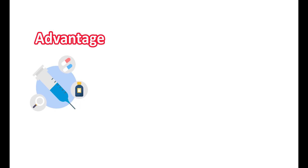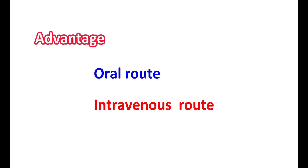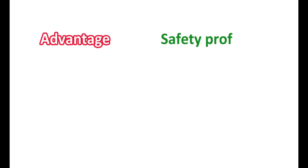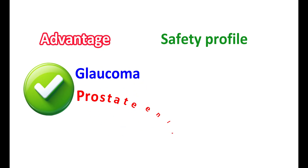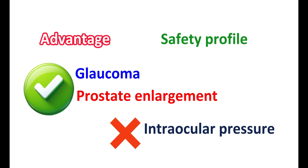The third advantage is that this medication is available by both oral route as well as intravenous route. So, whenever immediate action is required, drotavarine can be given by intravenous route. Finally, another advantage of drotavarine is its safety profile. This medication can be safely used in people with glaucoma or prostate enlargement, as it does not increase the intraocular pressure or worsen the symptoms of prostate enlargement. Therefore, drotavarine is widely used as an antispasmodic with better advantages.